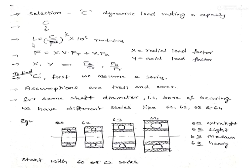This L is given in hours and can be converted into revolutions for substitution. The equivalent load F is found from the formula: F = X × V × F_R + Y × F_A, where X is the radial load factor, Y is the axial load factor, and V is the rotation factor. F_R and F_A values are given in the question.